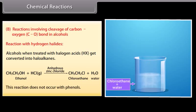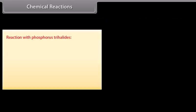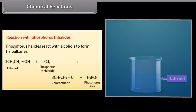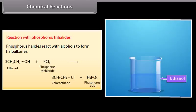This reaction does not occur with phenols. Reaction with phosphorus trihalides: phosphorus halides react with alcohols to form alkyl halides. Phosphorus trichloride reacts with ethanol to form chloroethane and phosphorus acid.